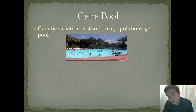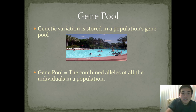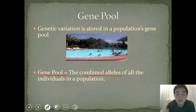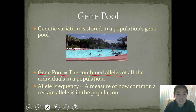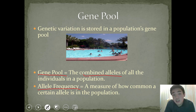In population genetics, one of the first things you learn about is a gene pool. A gene pool is where all the genetic variation of a population is stored — it's the combined alleles of all individuals in a population. When looking at individuals, we examine allele frequency, which is a measure of how common a certain allele is in a population. Some alleles have a higher allele frequency, meaning more individuals carry them, while others have a lower frequency, meaning fewer individuals carry that allele.